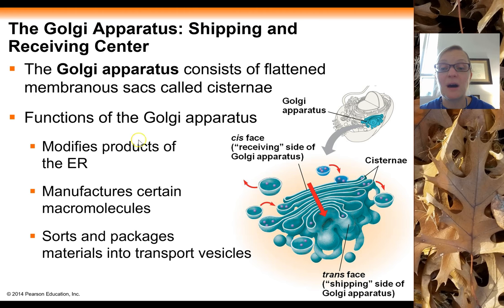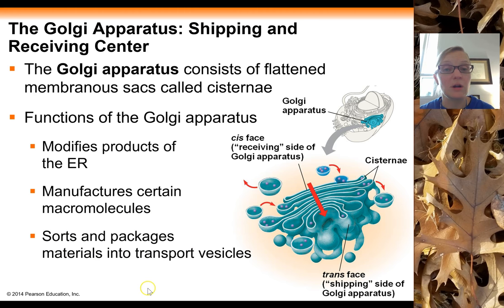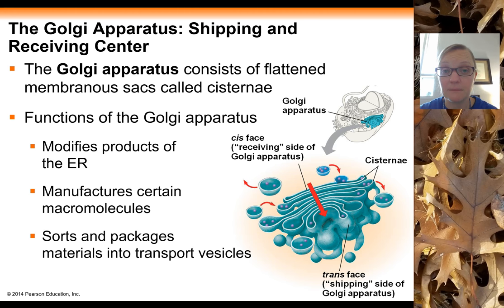The Golgi serves as a polishing, packaging, and shipping center for the cell. It helps to modify products of the ER, manufactures certain macromolecules like carbohydrates, and once everything is complete, it sorts all those products, packages them into transport vesicles, and makes sure they get to where they need to go.